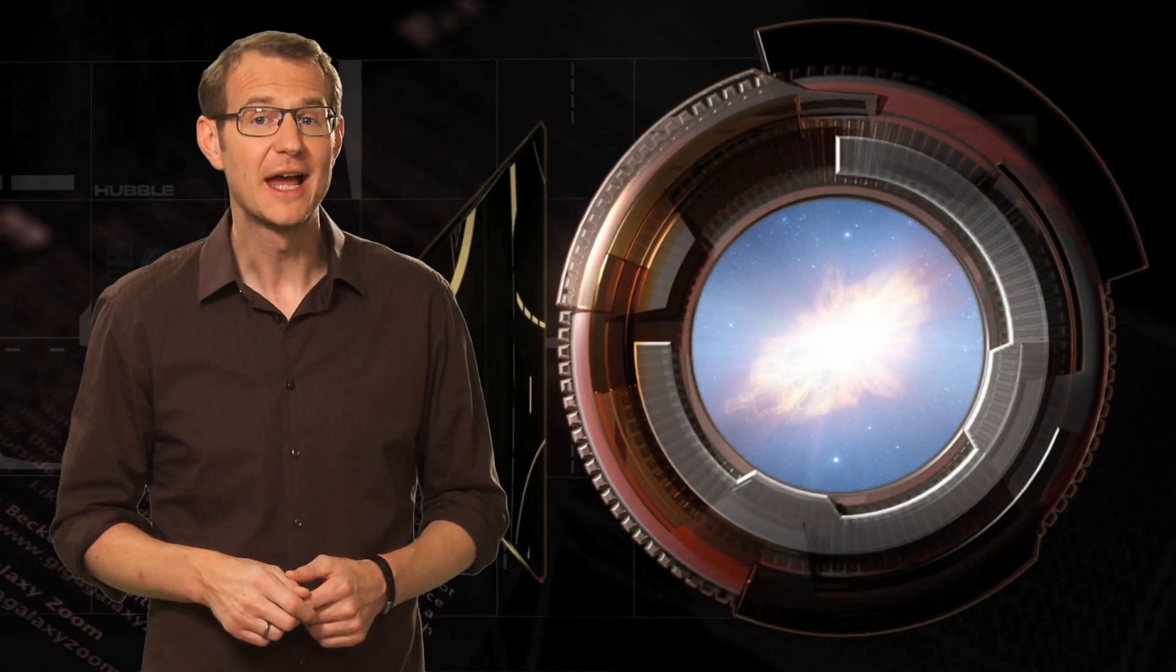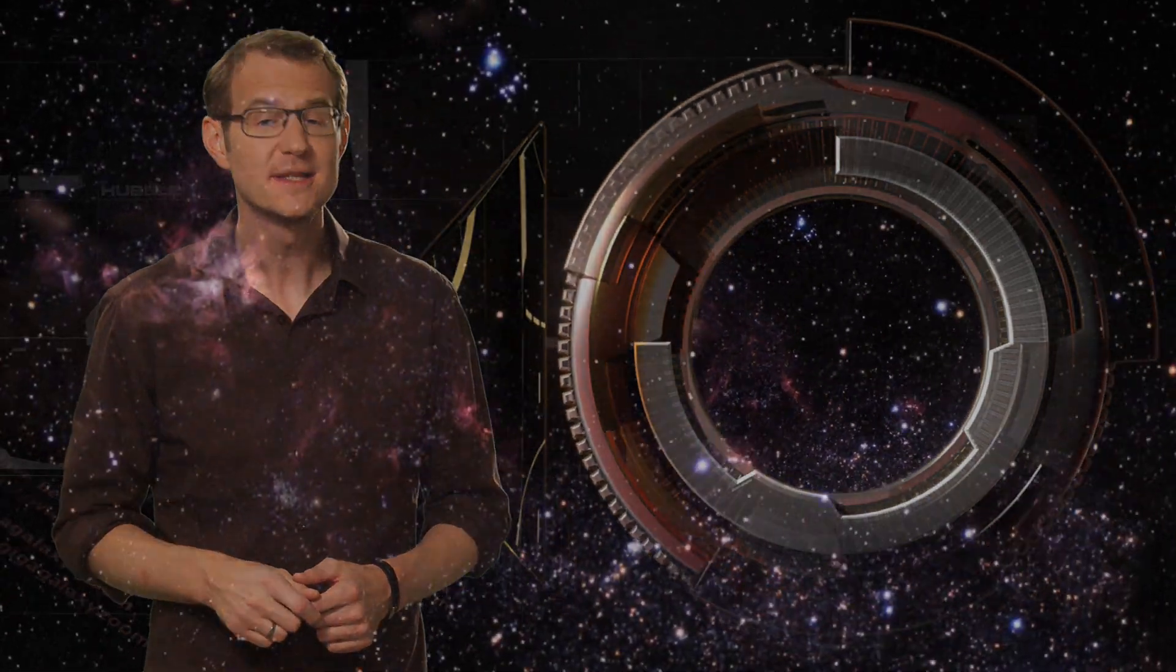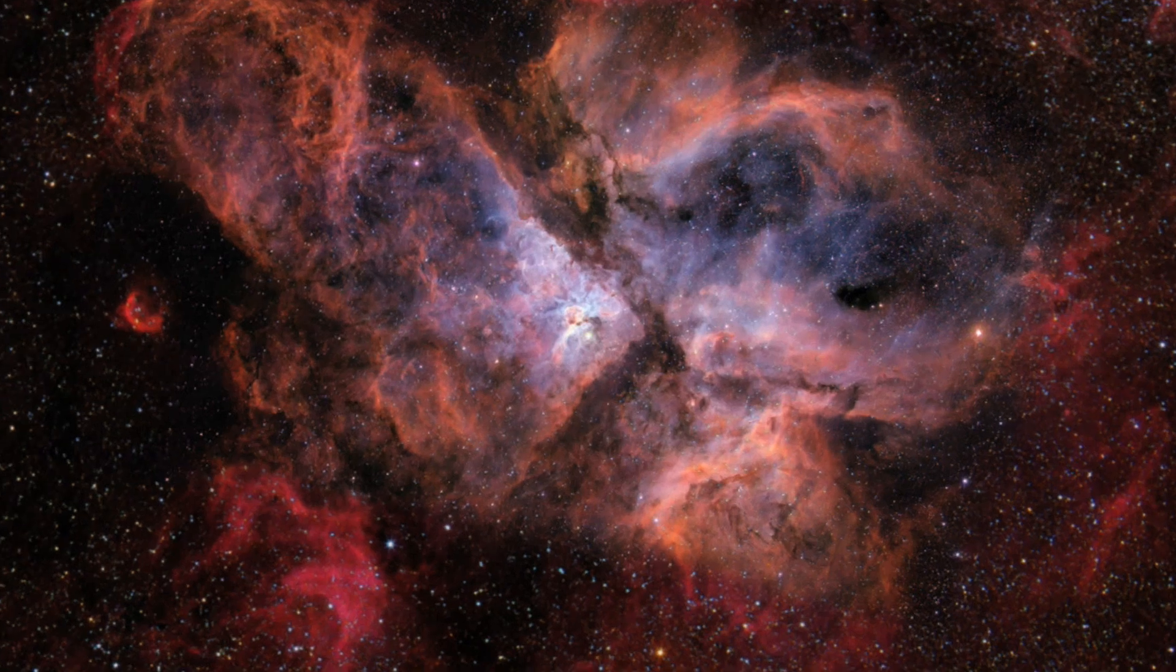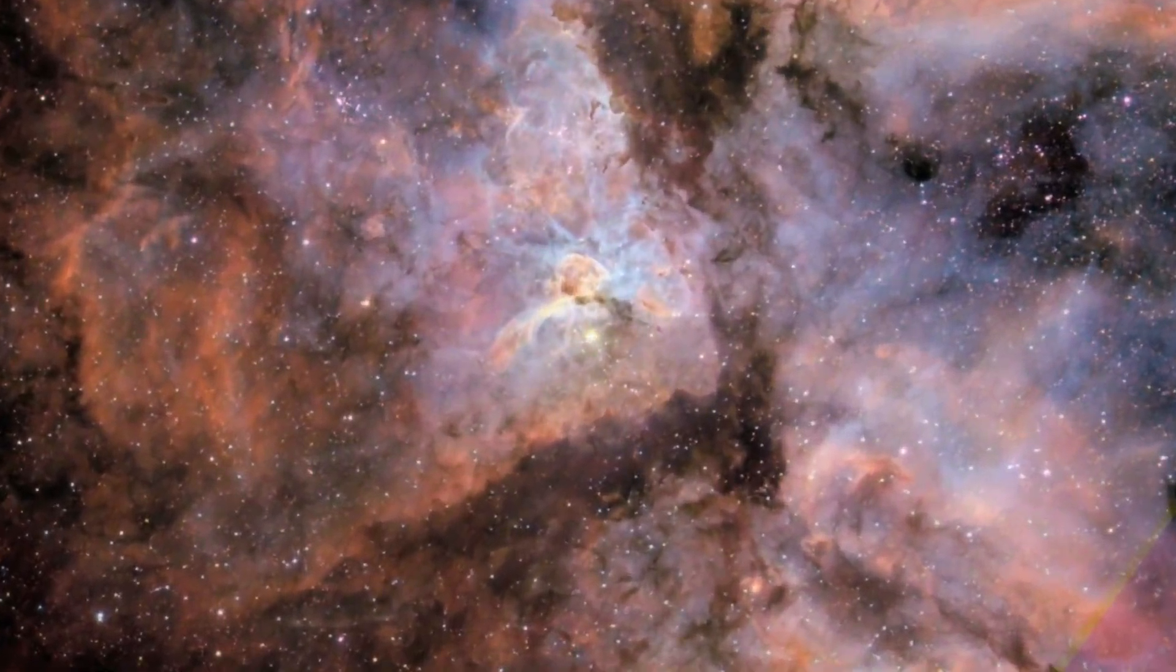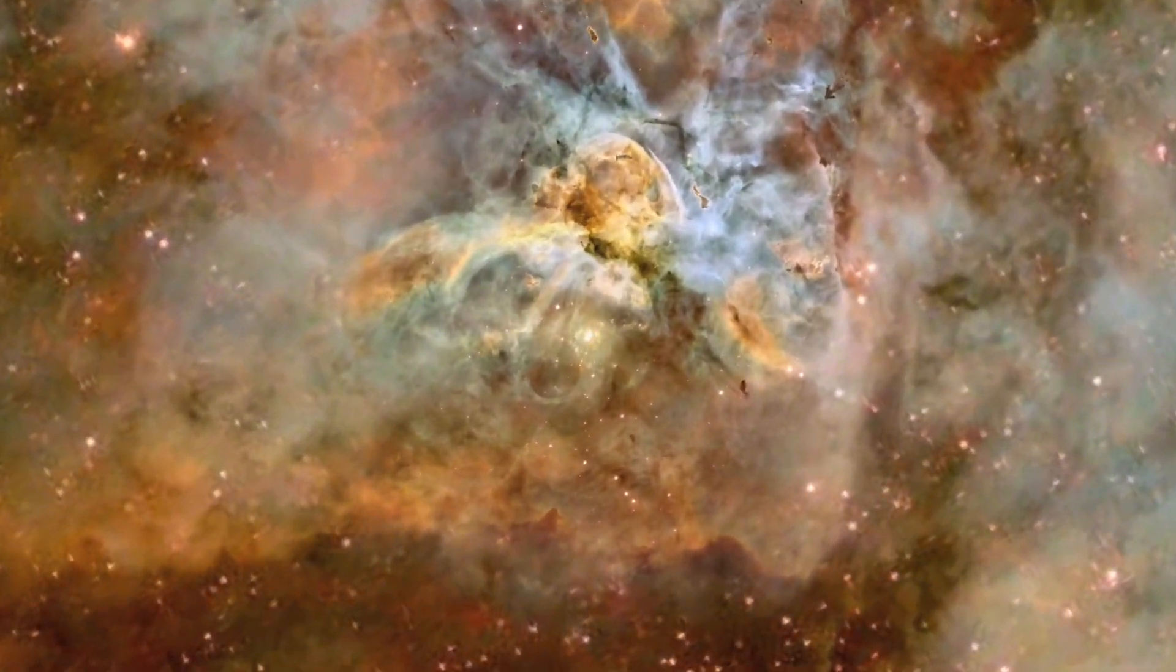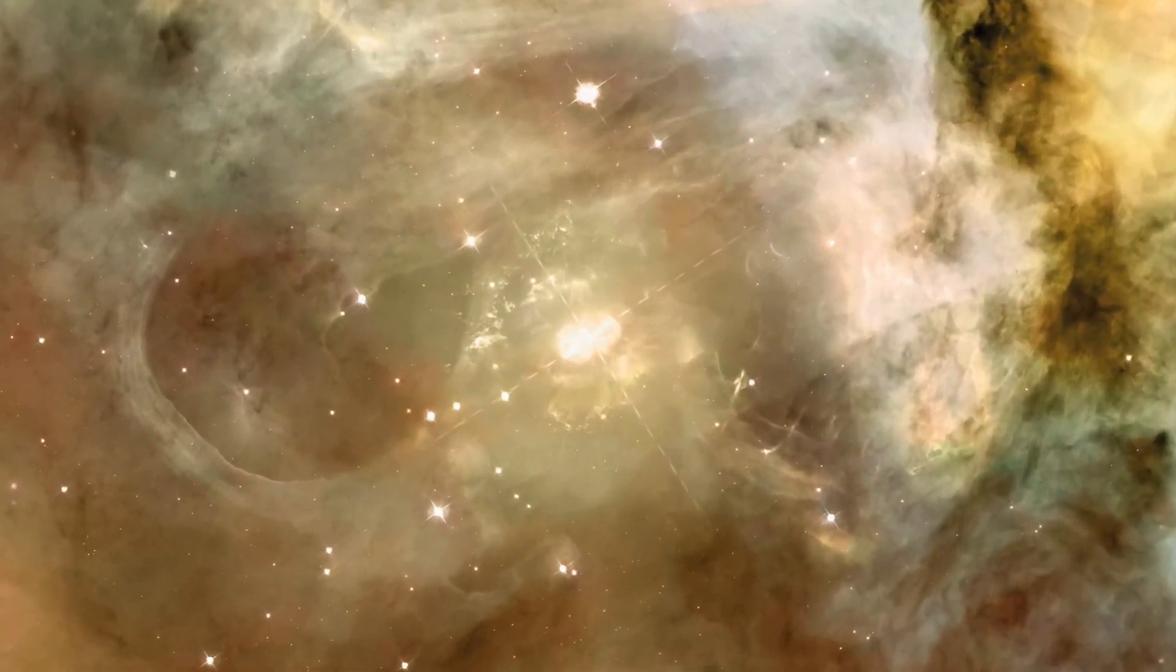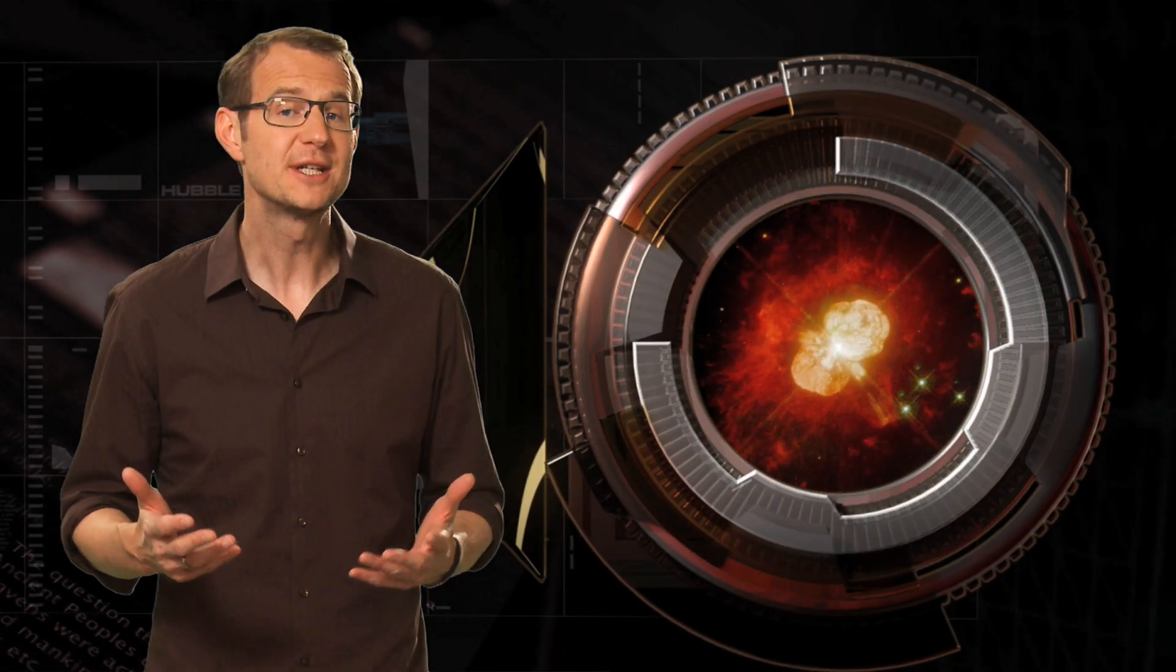Now one of the supernova candidates that is closest to Earth is the star Eta Carinae, which is about seven to eight thousand light years away. Now this star nearly exploded already in the 19th century. And when Hubble came to image it in the 1990s, the huge gas cloud that was ejected during that failed supernova was clearly visible. Now again, we can't predict when exactly Eta Carinae is going to explode.